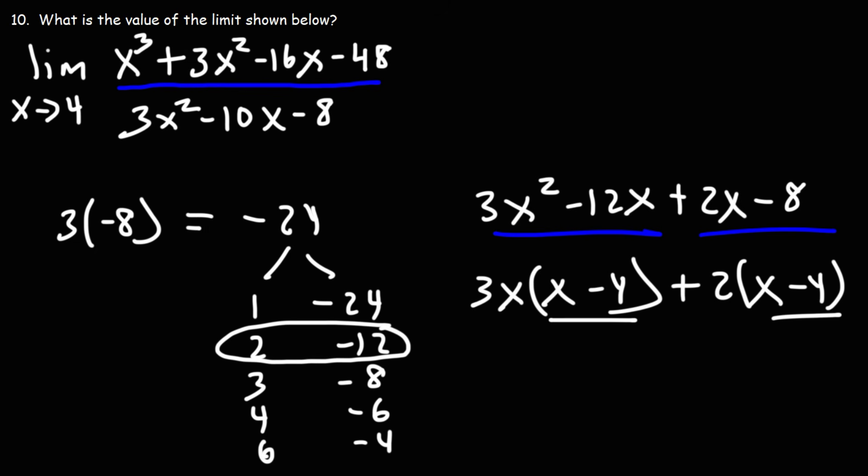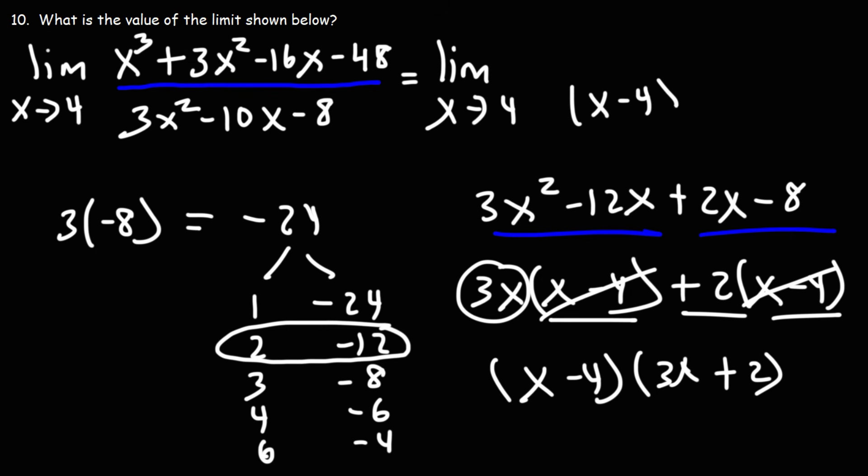Now when you get a common factor, you know you're on the right track. So let's factor out x minus 4. We get 3x and if we take x minus 4 out of this term, we're left with plus 2. So what we have here is the limit as x approaches 4 and on the bottom we have x minus 4 times 3x plus 2.